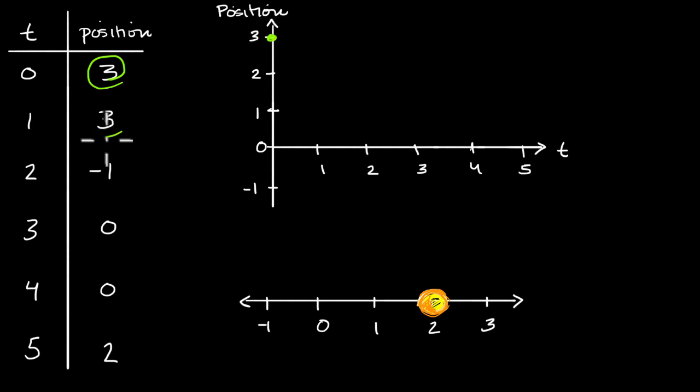And then at time equal one, we're at three again. At time two, we are at negative one. At time two our position is negative one. At time three, our position is zero. So our position is zero. Remember, even though we're thinking about left-right here, here position is up-down. So here our position is zero at time three. And then at time four, our position is still zero. And then at time five, our position is at two.